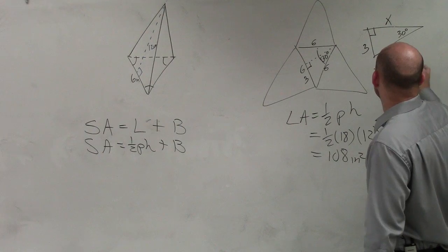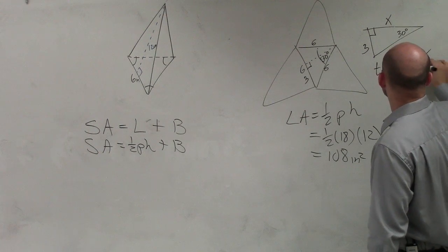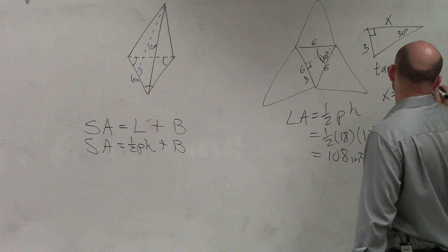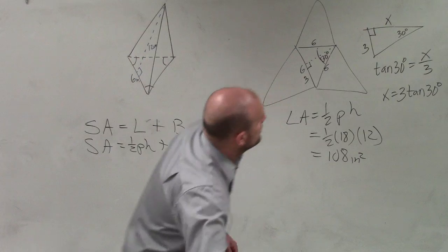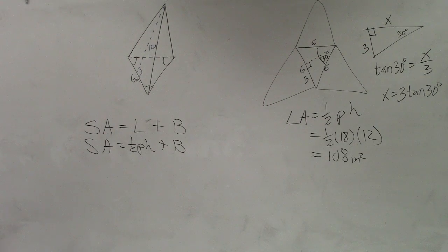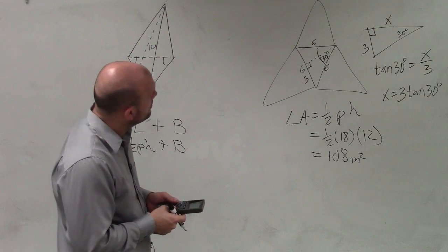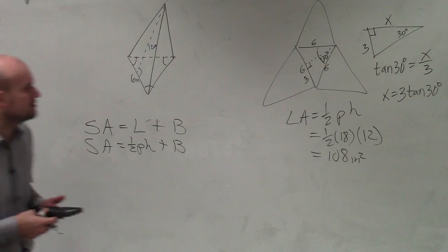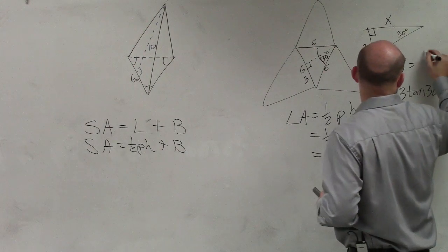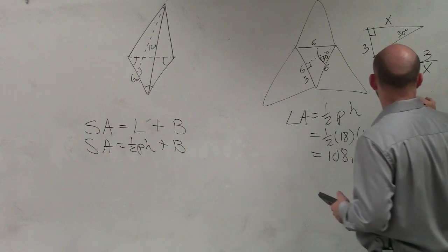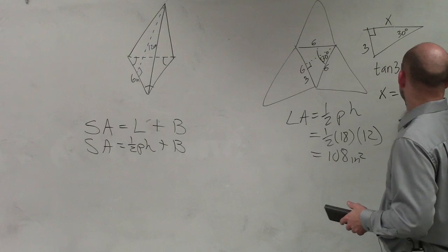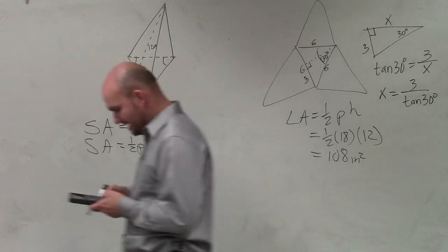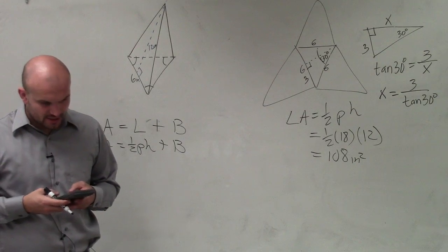So therefore, I can say the tangent of 30 degrees equals x over 3. x equals 3 times tangent of 30 degrees. So to go ahead and figure out the height, I'll do 3 times the tangent of 30 degrees. And 3 times, tangent opposite over adjacent. Opposite, 3 over x, I'm sorry. It's 3 divided by the tangent of 30 degrees, which is 5.19.